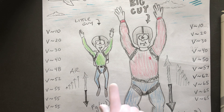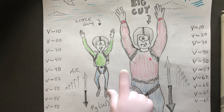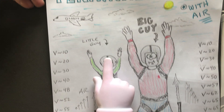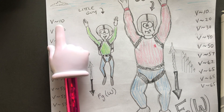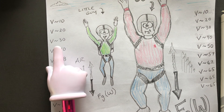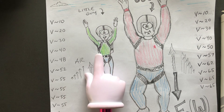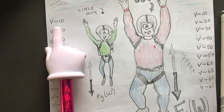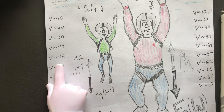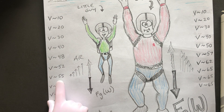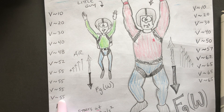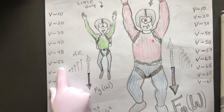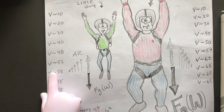When they both jump out of the airplane, they both start to increase their velocity as they fall. Looking at the little guy, his velocity goes from 10, 20, 30, 40, 48, 52, 55, 55, 55 — those velocities become the same because he's reached what's called terminal velocity.